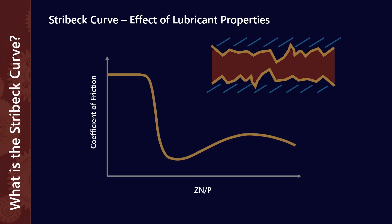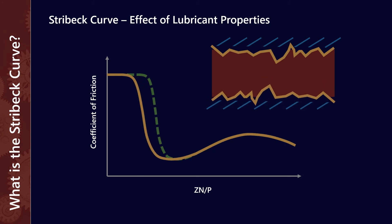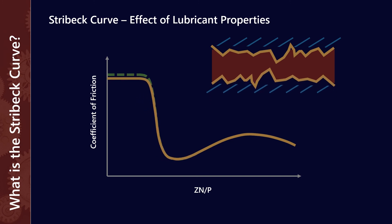Another way to affect the Stribeck curve with lubricant properties is by controlling the film thickness. If we increase the viscosity of the lubricant, we can get the boundary lubrication to start earlier — because with higher viscosity you can support more load, so boundary lubrication tends to start a little bit earlier. Another way is if we form a thin solid-like film with some shear strength in it, that can help reduce the coefficient of friction in boundary lubrication. We can generally achieve this with surface-acting additives and friction modifiers.